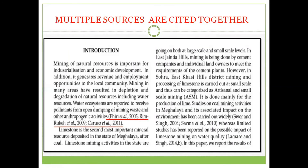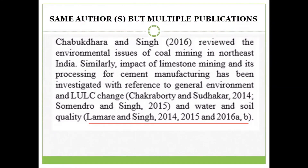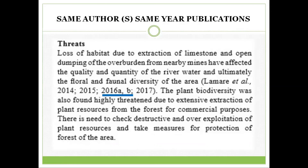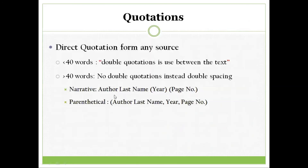In case multiple sources are cited together, a semicolon will be used to separate the different authors. Sometimes the same author has multiple publications — in such cases, the name of the author and the year of publication will be separated by a comma. If different publications of the same author are cited, a comma will be used to separate the different years. In some cases, if the same author published several publications in the same year, you are going to use alphabets like a, b, c, d, and so on.